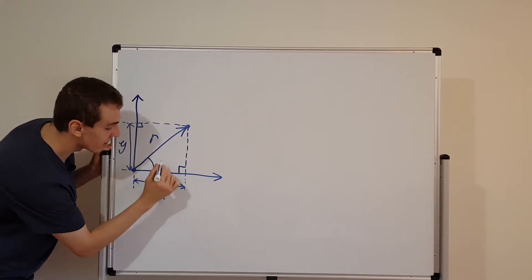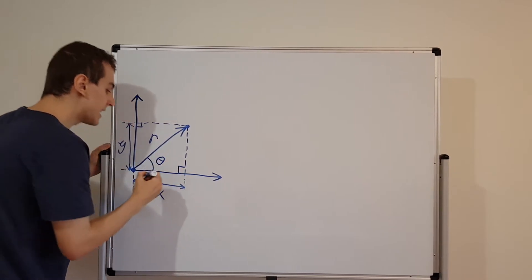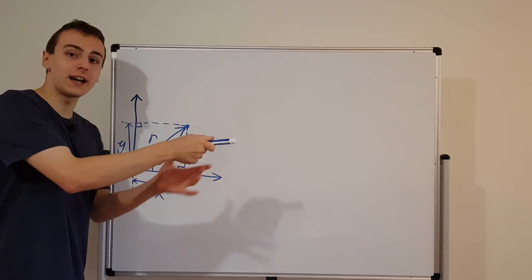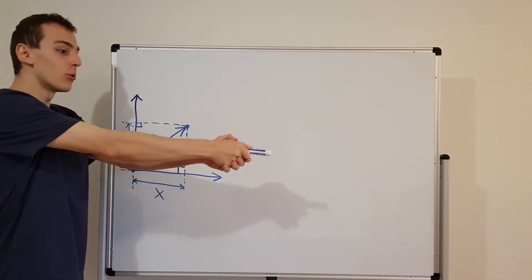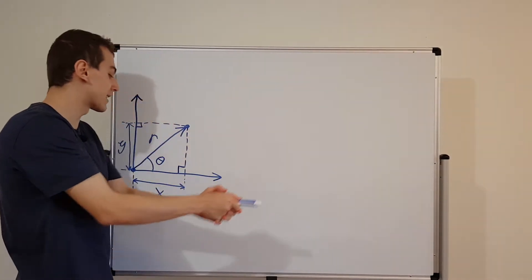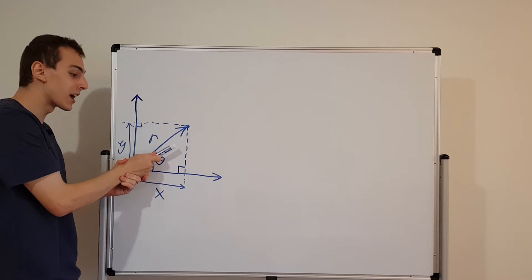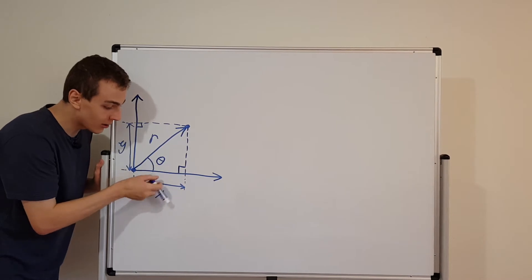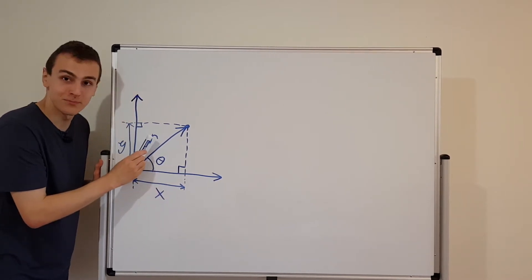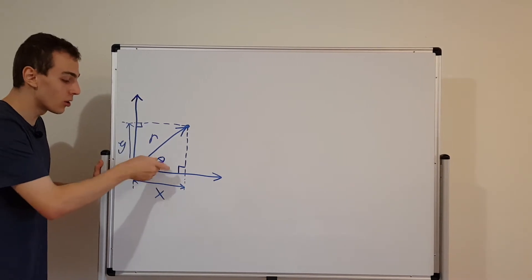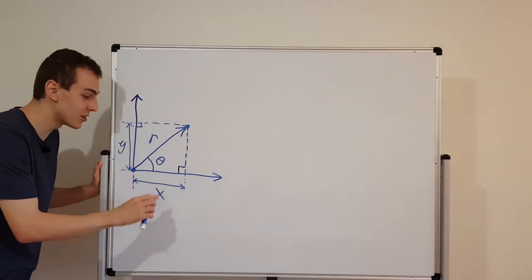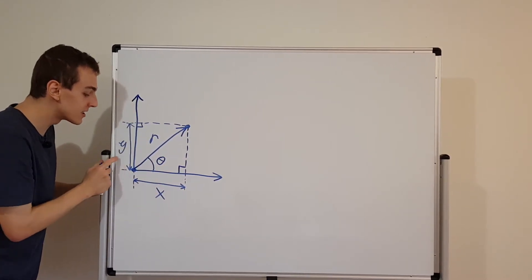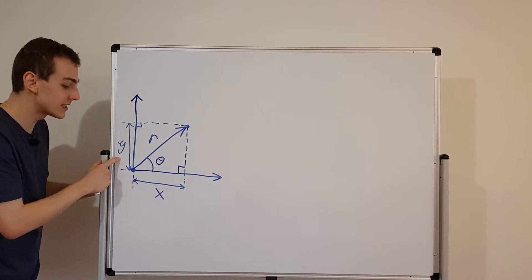The last coordinate we need is theta — this angle. Theta we're going to measure from the positive horizontal axis, where theta equals zero, and all angles come up from this axis. Every positive angle goes up from here, and negative angles go down. If you go all the way around the circle, you get to two pi radians, and then you're back to zero. So that's how theta works. This is our angle, this is our radial distance r, this is our vertical distance in the Cartesian coordinate system, and this is our horizontal distance.